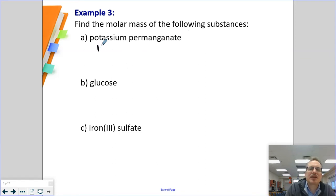To me, this is KMnO4. So we have one potassium at 39.10, we have one manganese at 54.94, and we have four oxygens at 16.